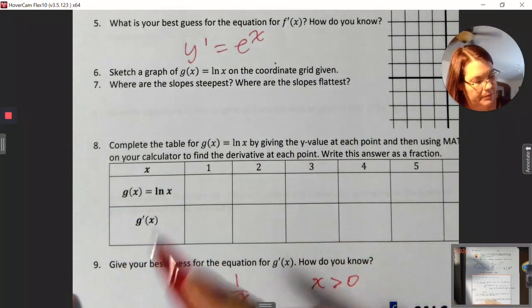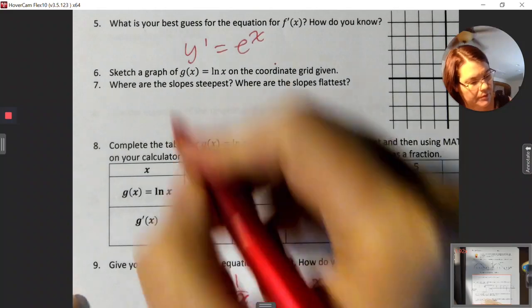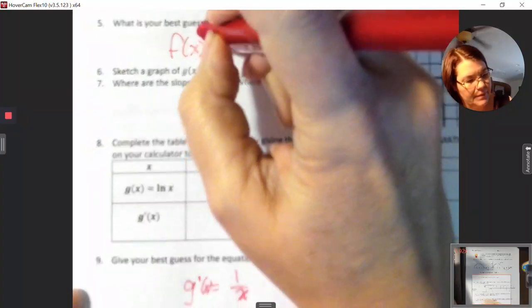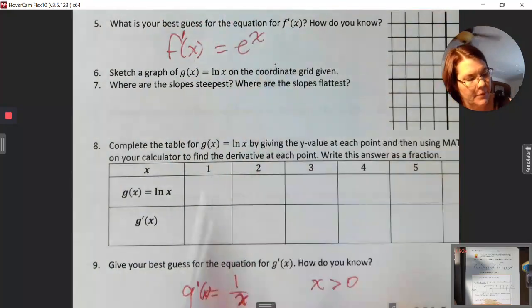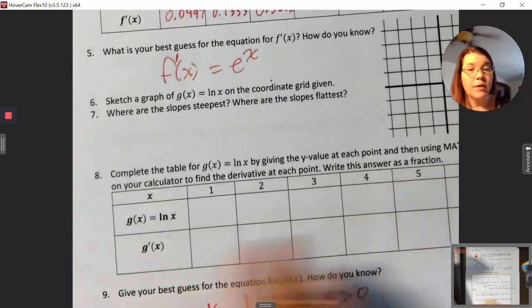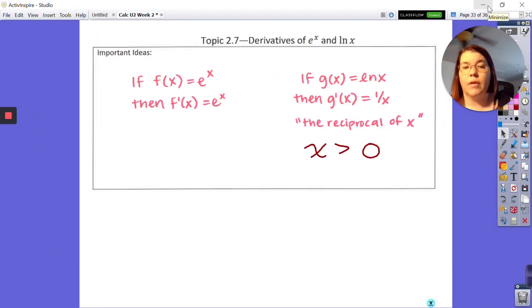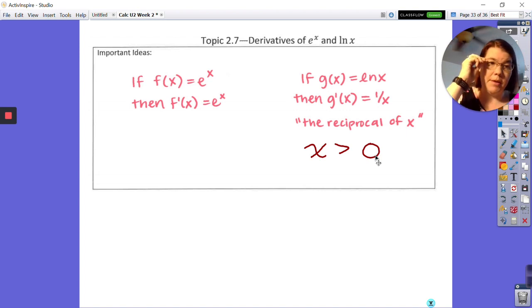The e to the x thing is incredibly the same, it's awesome. The natural log of x derivative is 1 over x, but it's only when x is greater than 0. We only get the first quadrant. The derivative of f of x equals e to the x is e to the x - they're the same. That's incredible. It's the only function whose rate of change is itself. The natural log of x is 1 over x, or the reciprocal of x, but only when x is greater than 0, because we can only take natural logs of numbers bigger than 0.